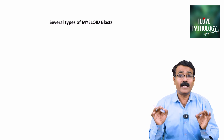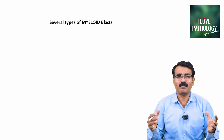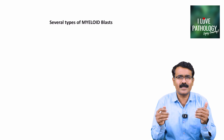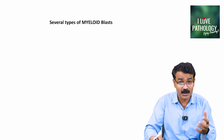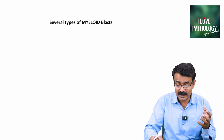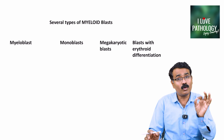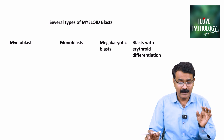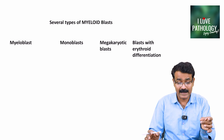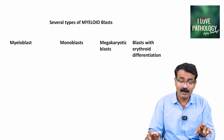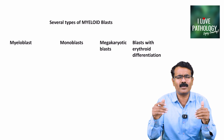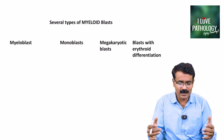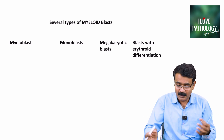Myeloid blasts can be appreciated morphologically as different types. They are: myeloblast, monoblast, megakaryocytic blasts, and blasts with erythroid differentiation — four different categories in total. The most common ones are the myeloblast and the monoblast.